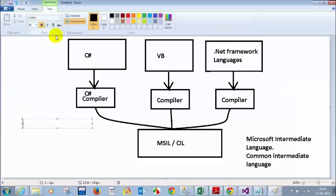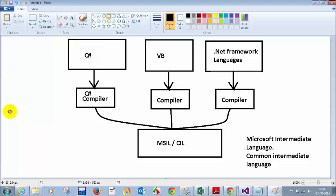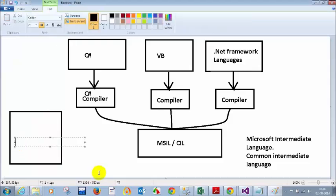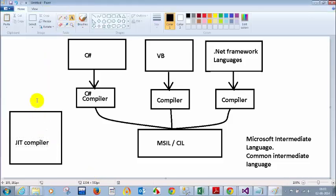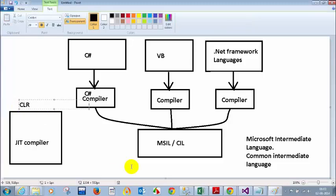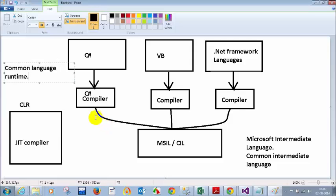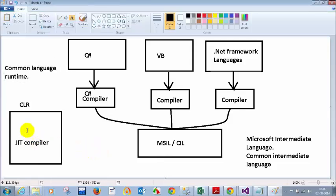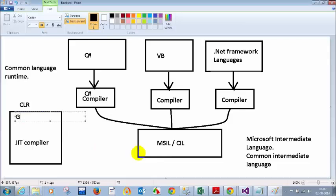CLR has a lot of advantages, one of which is the JIT compiler. CLR stands for Common Language Runtime. CLR will convert your MSIL code to native code using the just-in-time compiler. CLR will also take care of garbage collection, as well as security and other concerns.